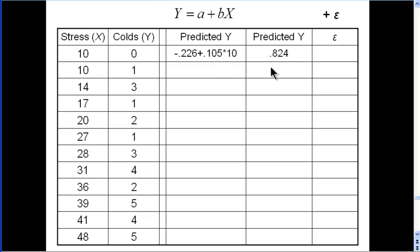So what do we get? We get a predicted value of 0.824. So the regression equation is slightly mispredicting the number of colds, because the actual person in this case actually had 0 colds.